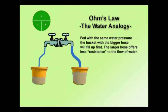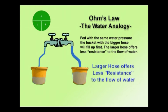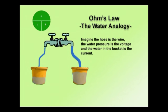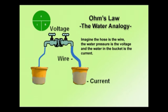We're going to use the analogy of water to describe the relationships. Imagine if you had two buckets with two hoses and two spigots coming right off of the same water pressure. Fed with the same water pressure, the bucket with a larger hose is going to fill up first. The larger hose offers less resistance to the flow of water. The hose is the wire, the water pressure is the voltage, and the water delivered into the bucket is the current.